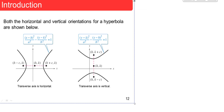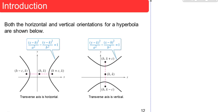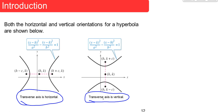There's a nice picture here showing both orientations. The transverse axis is horizontal in one case and vertical in the other. That also introduces the conjugate axis, which is the opposite axis from the transverse axis. Those are our standard form equations of hyperbolas.